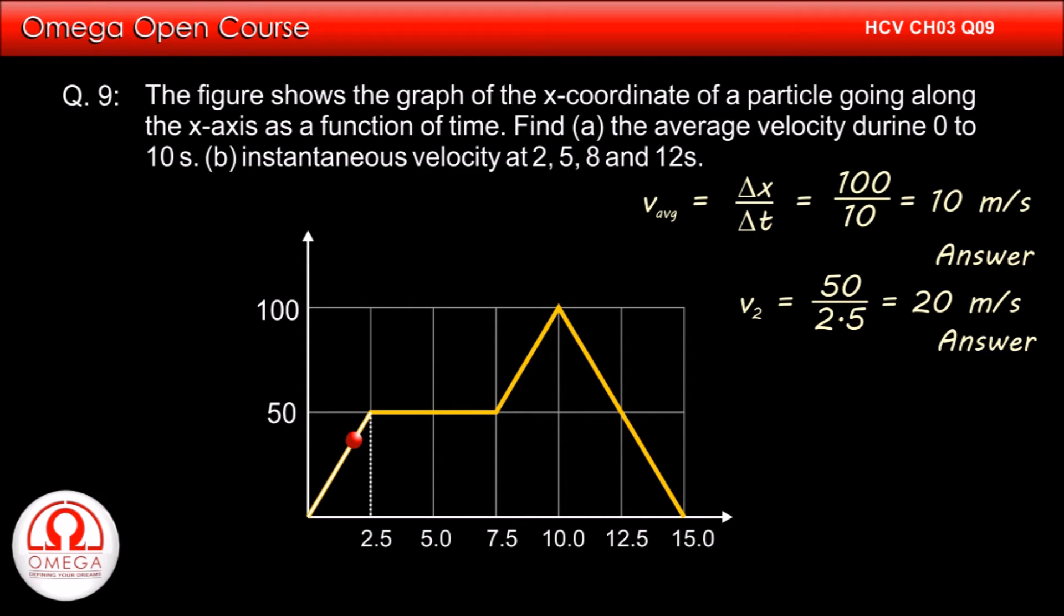As can be seen in the graph, the slope during t equals 2.5 to t equals 7.5 seconds is 0. Therefore, instantaneous velocity at t equals 5 seconds is 0.